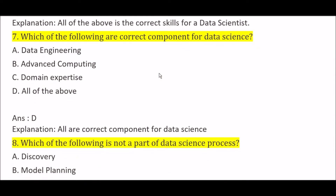Which of the following are correct components for data science? Option A: data engineering, Option B: advanced computing, Option C: domain expertise, Option D: all of the above. The right answer is Option D, all of the above — data engineering, advanced computing, and domain expertise are all correct components for data science.